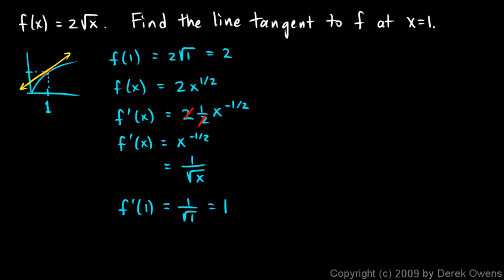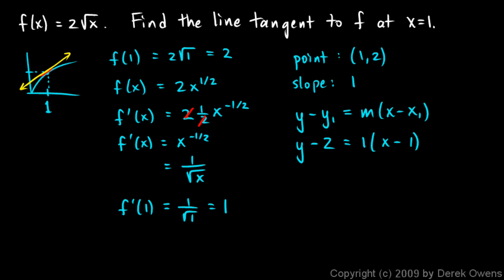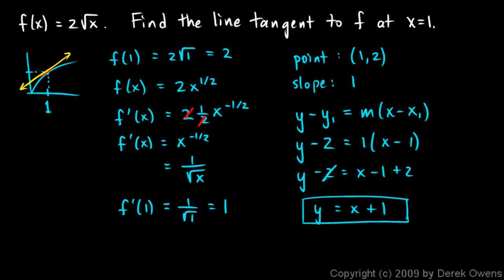So we have the point (1, 2) and a slope of 1. Using point-slope form: y minus y1 equals m times (x minus x1). Substituting: y minus 2 equals 1 times (x minus 1), so y minus 2 equals x minus 1. Adding 2 to both sides gives y equals x plus 1. That is the equation of the line tangent to this function at x equals 1.